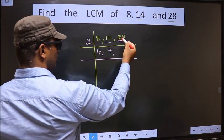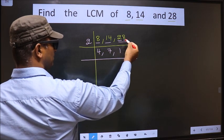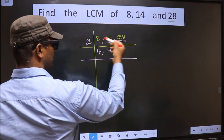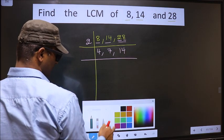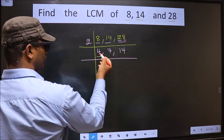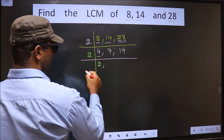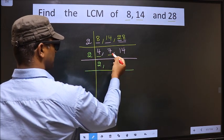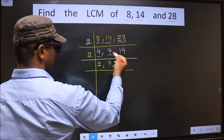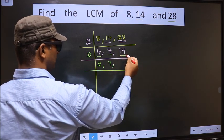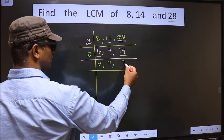First number 2 — when do we get 2 in the 2 table? 2 ones are 2. The other number 8 — when do we get 8 in the 2 table? 2 fours are 8. Here we have 4, and 4 is 2 twos. The other number 7 is not divisible by 2, so we write it down as 7. The other number 14 — when do we get 14 in the 2 table? 2 sevens are 14.